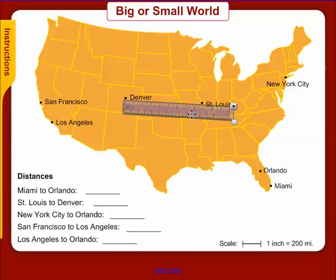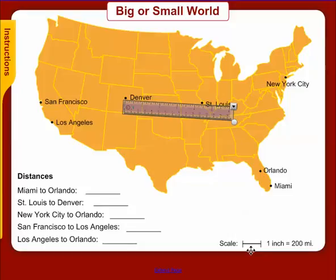On this ruler, the distance between Denver and St. Louis is 4 and a half inches. So all we need to do is set up a conversion: 4.5 inches, and if 1 inch equals 200 miles, we would take 4.5 times 200. The total distance in real life between Denver and St. Louis is 900 miles. The map scale is a tool to show the relationship between distances on a map and distances in real life.